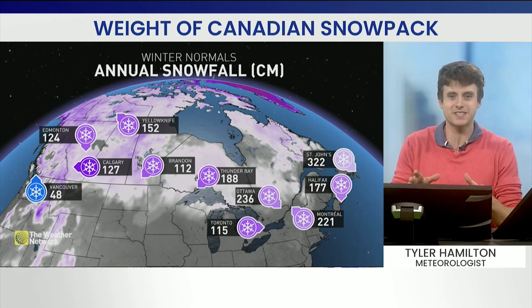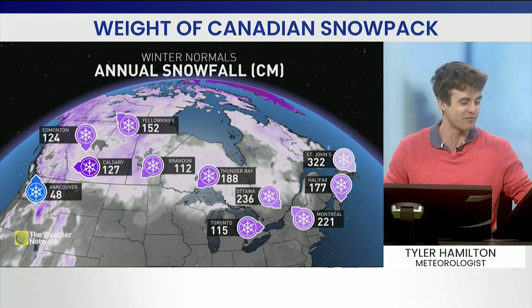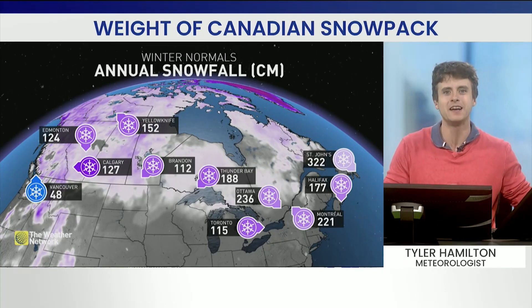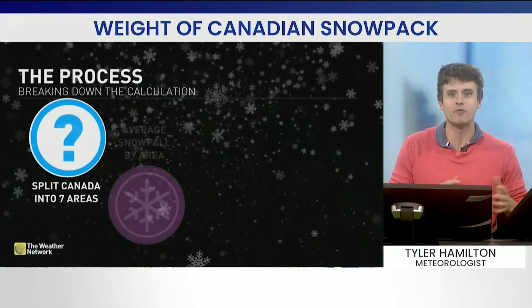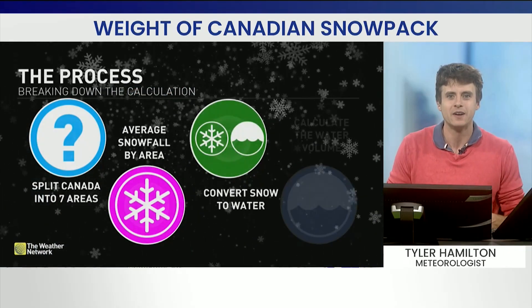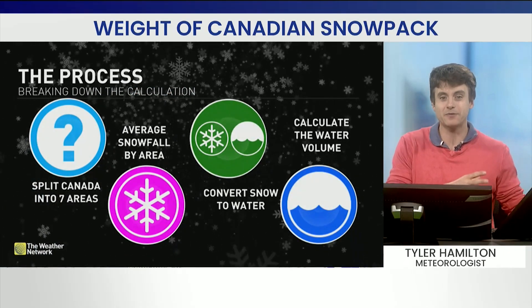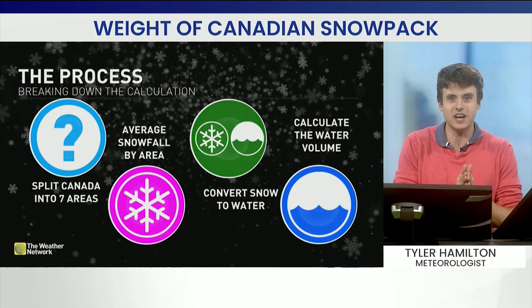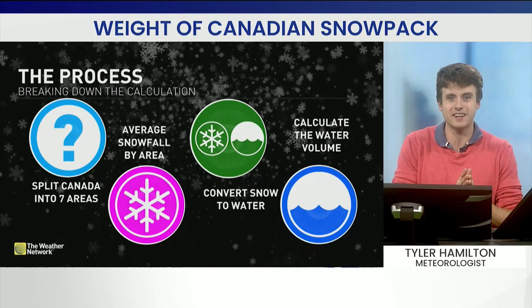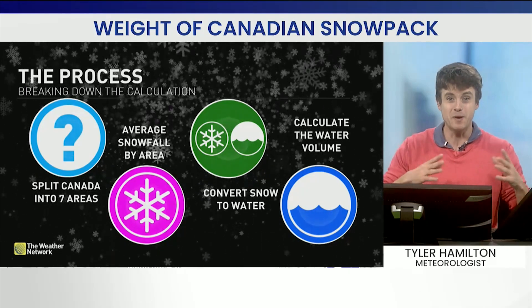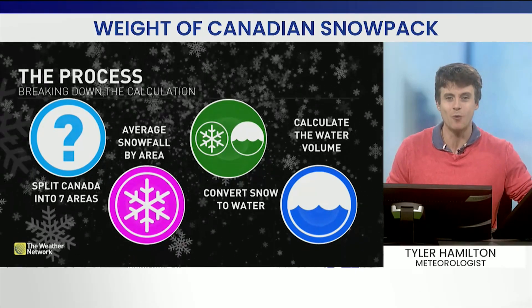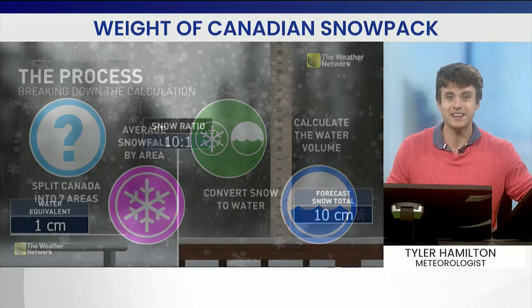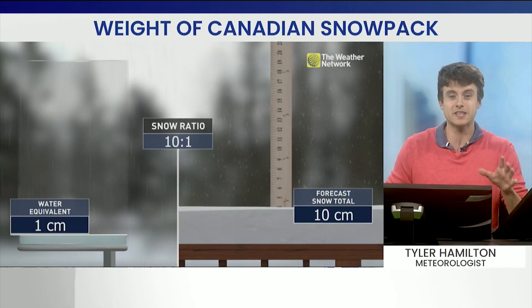So we crunched the numbers. This is the annual snowfall across Canada, but to get the overall weight we divided Canada into seven regions. The average snowfall by each area was calculated, and then we melt that snow down to water and calculate the weight of that water. We use something called a snow ratio.